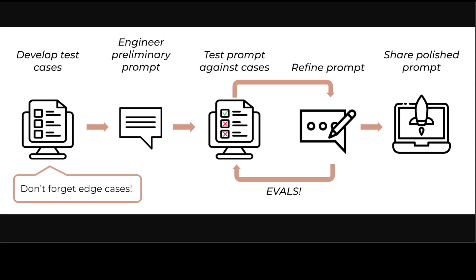Prompt engineering is an empirical science that involves iterating and testing prompts to optimize performance. Most of the effort is not actually in writing prompts — the majority of prompt engineering time is spent developing a strong set of evaluations, followed by testing and iterating against these evaluations, or simply 'evals'.